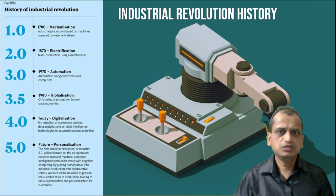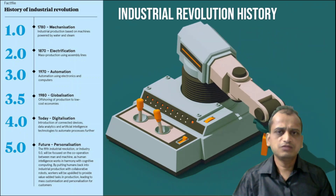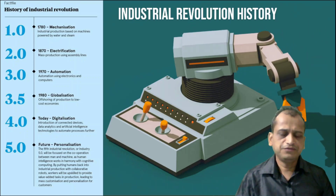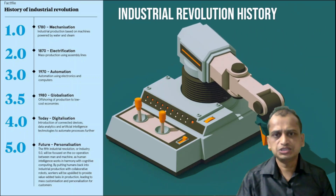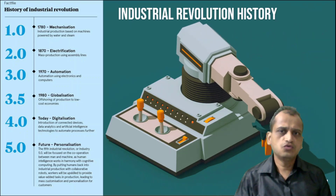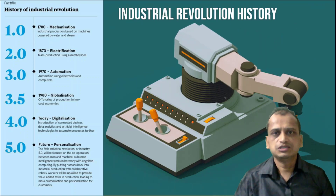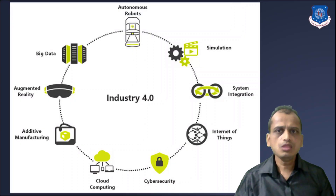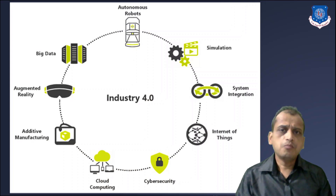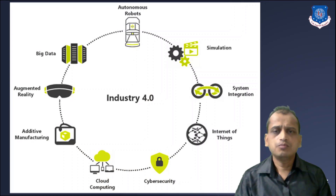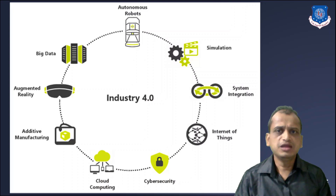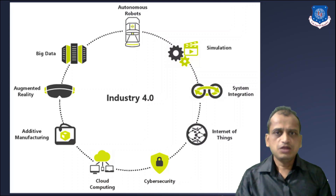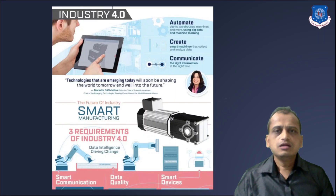We also looked into the different industrial revolutions: Industry 1.0 started with mechanization, followed by electrification, then automation, then globalization, then digitalization which is Industry 4.0, and we are heading towards Industry 5.0 which is personalization. We also looked into the nine key component pillars of Industry 4.0 — IoT, system integrations, cloud computing, and big data are some of these key components that comprise the framework of Industry 4.0.